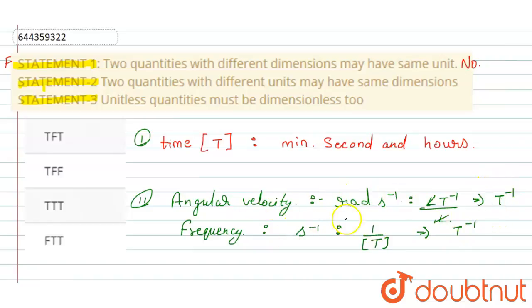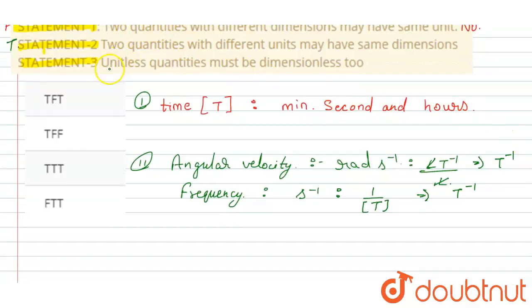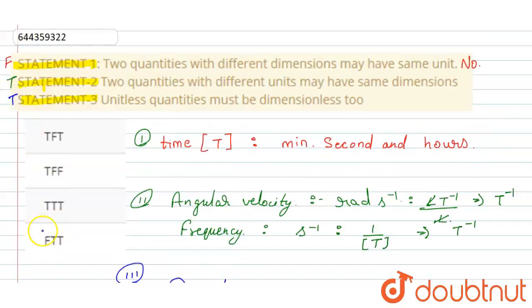Statement 3 says unitless quantities must be dimensionless too. This statement is true because, let's suppose we have four apples. There is no unit of apple, and also their dimension is M^0 L^0 T^0. Four is a constant number, so there will be no dimensions and no units. This statement is true.